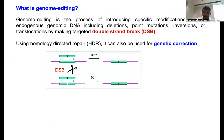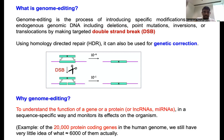What is genome editing? Genome editing is the process of introducing specific modifications in the endogenous genomic DNA — including deletions, point mutations, inversions, or translocations — by making a targeted double-strand break. As mentioned, homologous recombination in mammalian cells happens in only 1 in 10⁶ cells — very, very low. But if you make a targeted double-strand break, the homologous recombination efficiency goes up several hundred-fold. That is where genome editing makes a major difference in genetic correction.